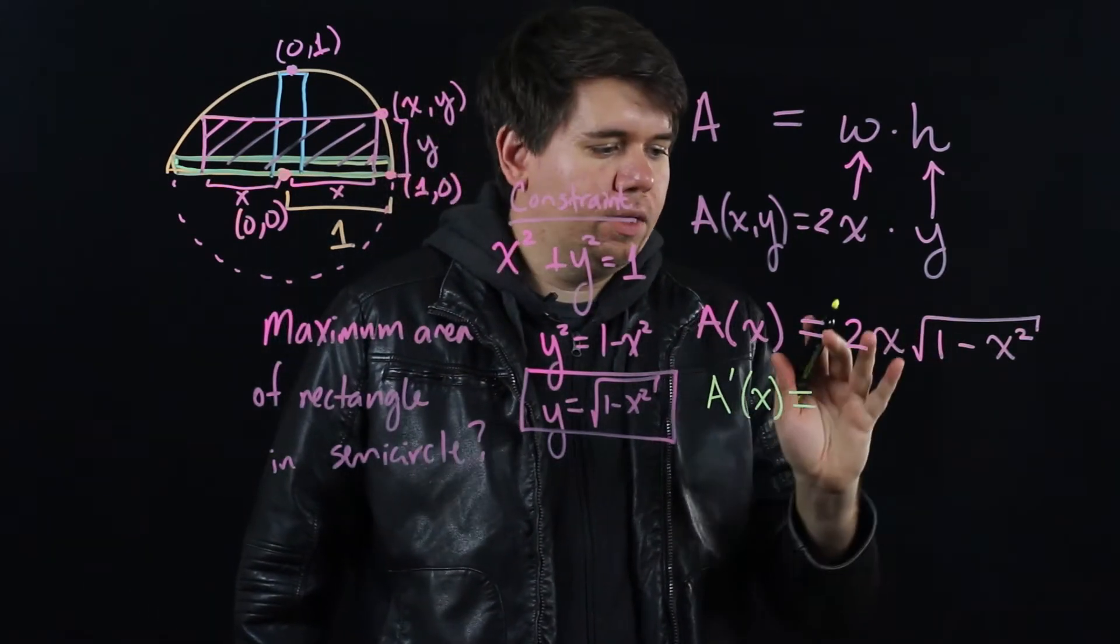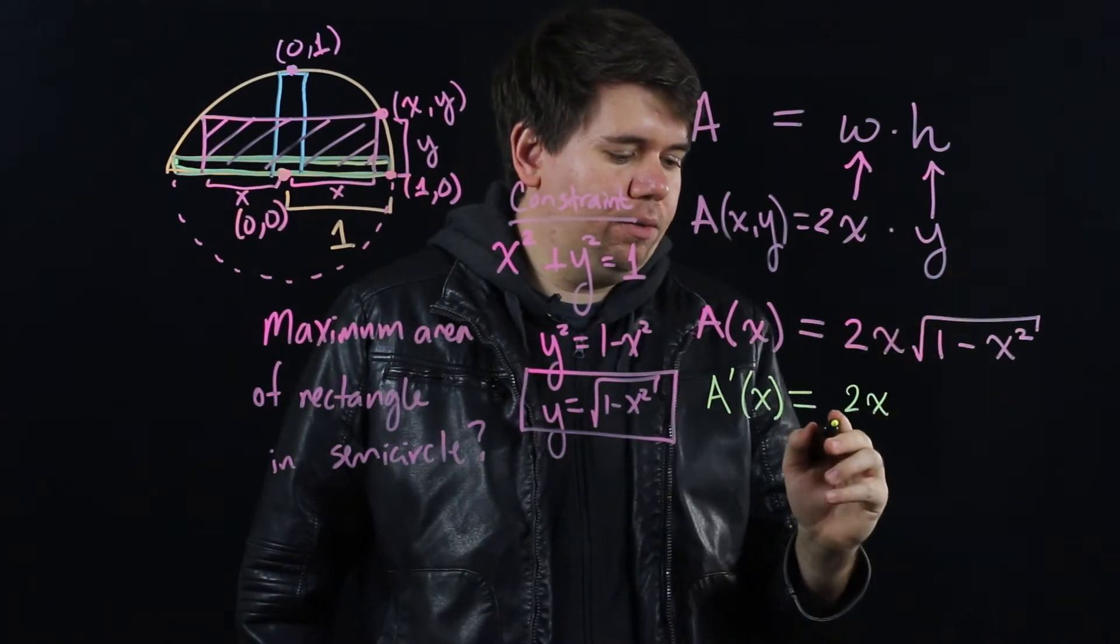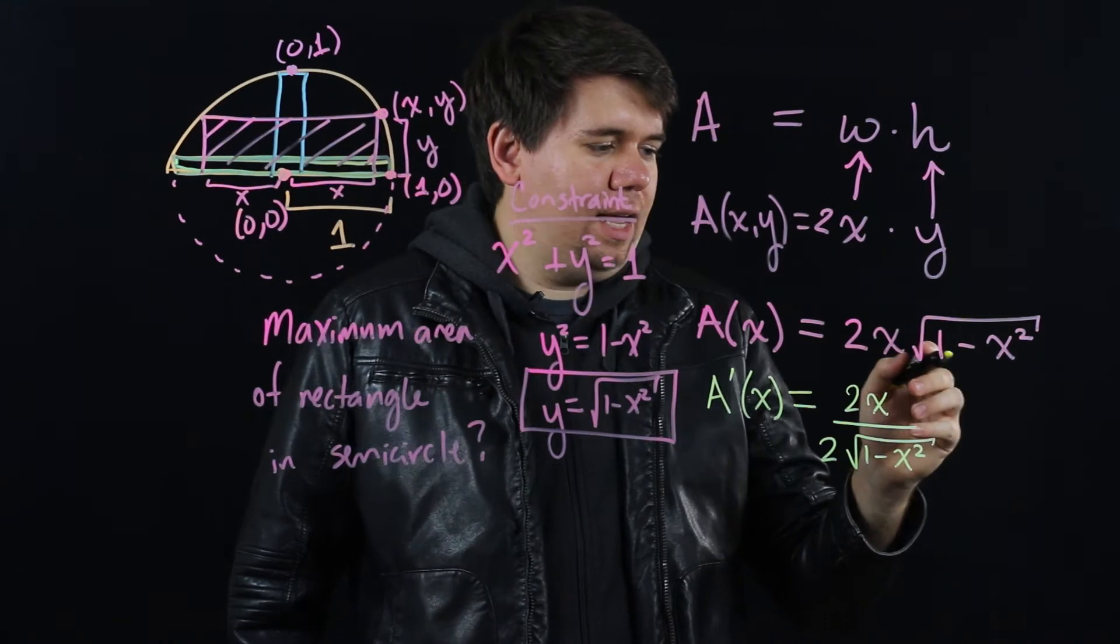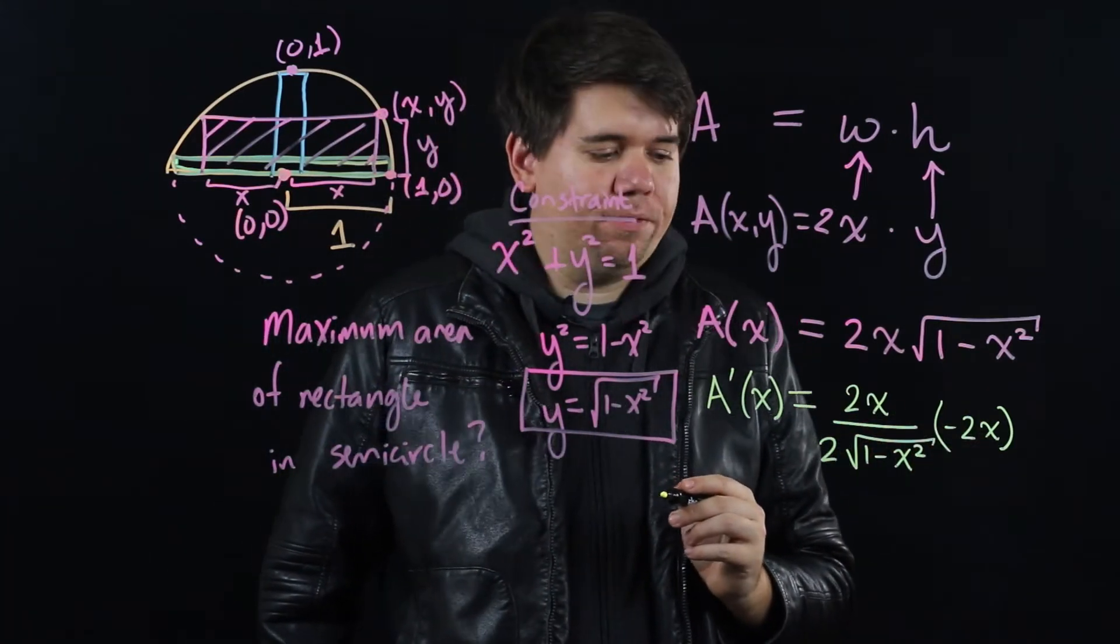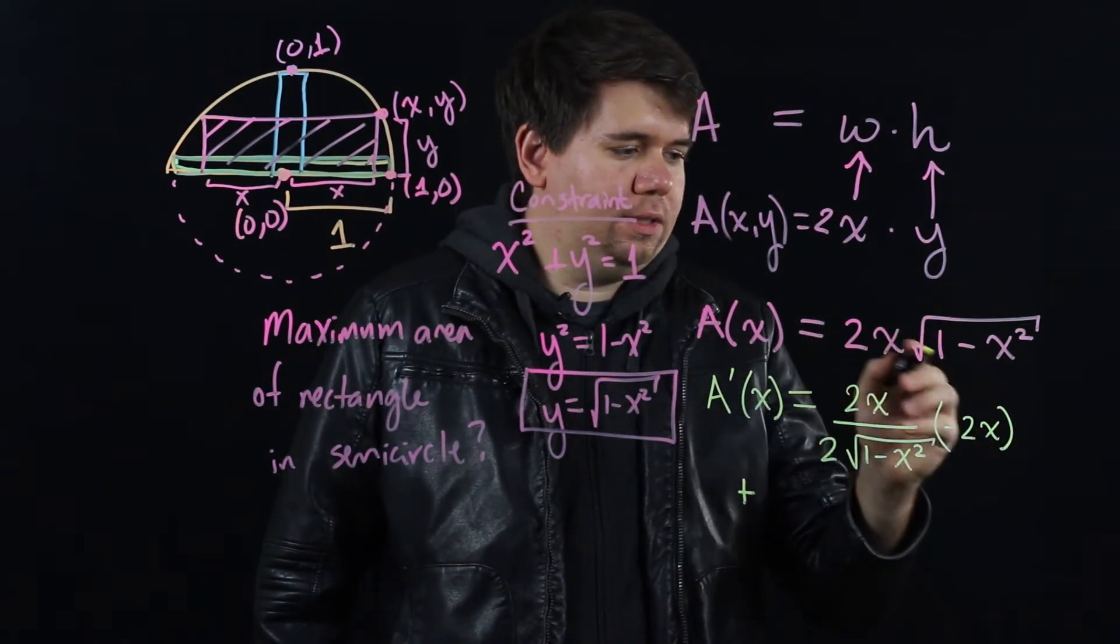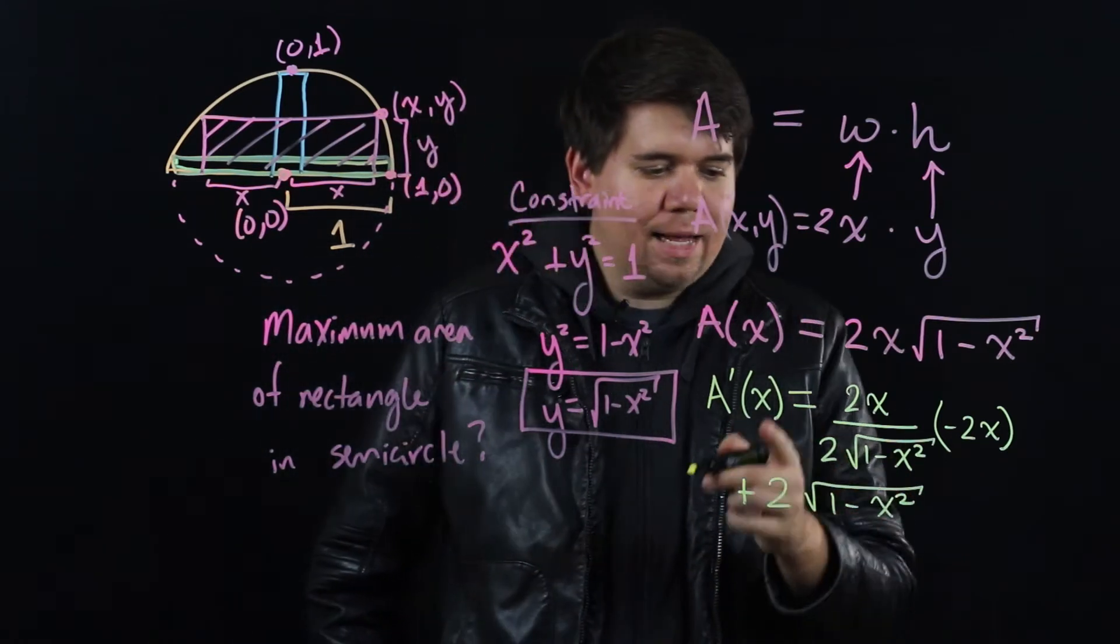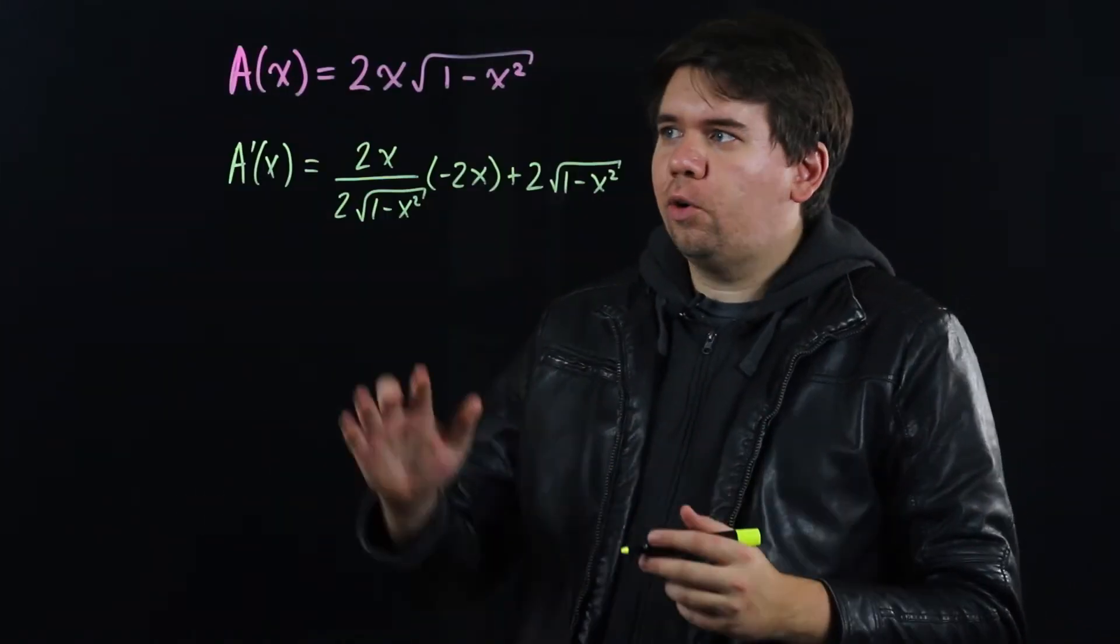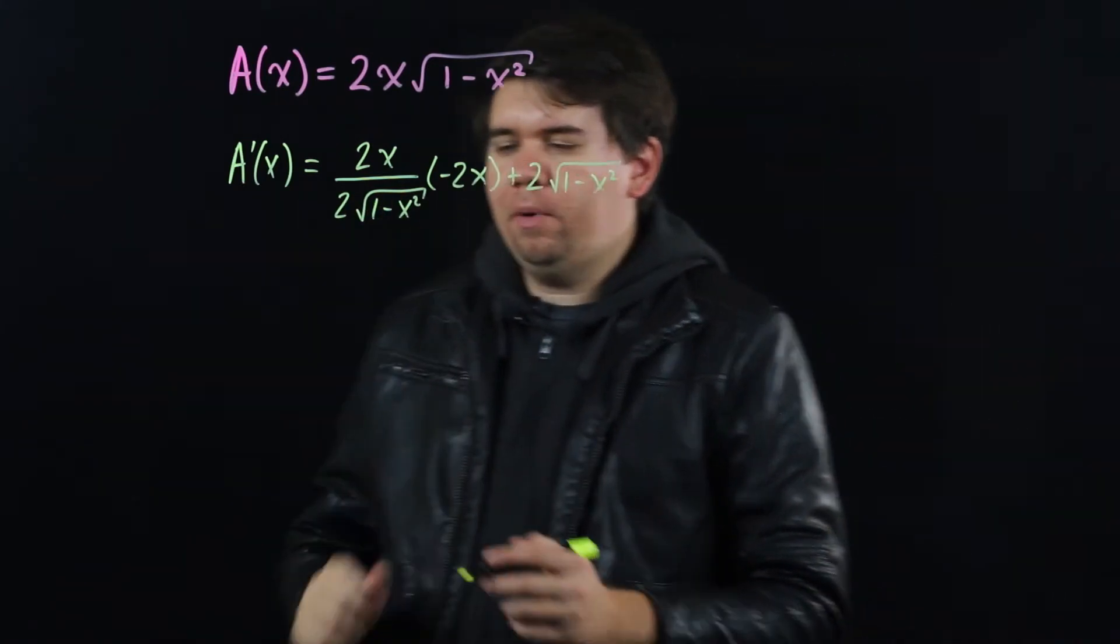The derivative of this area function is equal to, I'll need to use my product rule. Hold the first, 2x, take the derivative of the second. Since it's a square root, it ends up being 1 over 2 times that square root. But then by the chain rule, I have to multiply by the derivative of the inside, so times negative 2x. That was the first half of the product rule, hold the first derive the second, plus hold the second derive the first, so just plus 2 square roots of 1 - x². That's getting a little bit messy, but we can go ahead and clean that up.